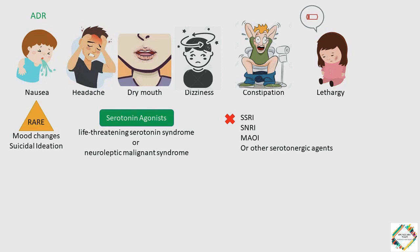As mentioned earlier, valvulopathy was observed with 5HT2B receptor agonists, and there are no particular data regarding the incidence of this condition in 5HT2C receptor agonists such as Lorcaserin. Even so, the patient should still be monitored for the development of this condition. For the same reason, individuals with a history of heart failure should use this agent with caution.